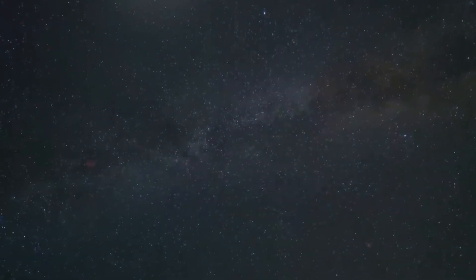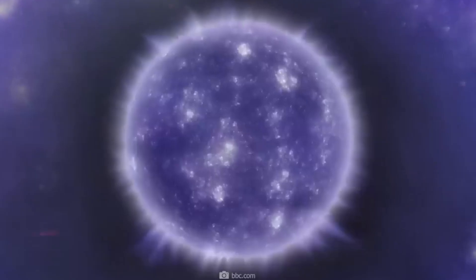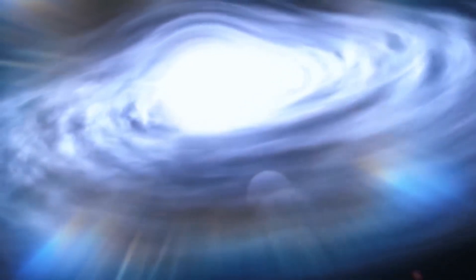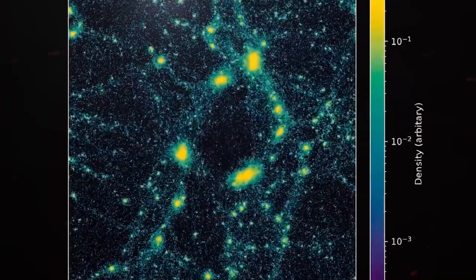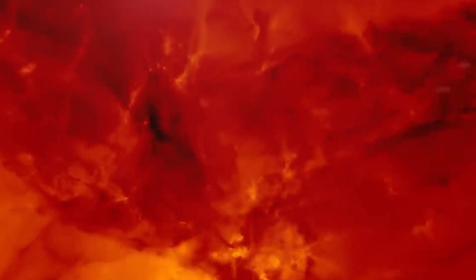Webb's observations of 44 galaxies formed within the first 500 million years of the universe raise questions about the standard model of cosmology. Some galaxies formed as early as 200 million years after the Big Bang, emitting unexpectedly high energy levels.